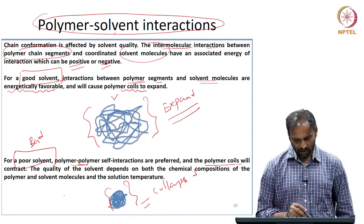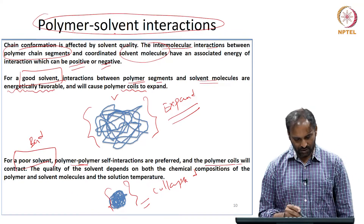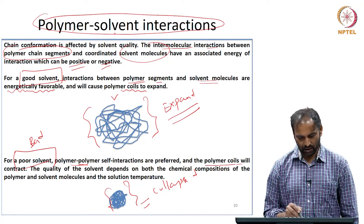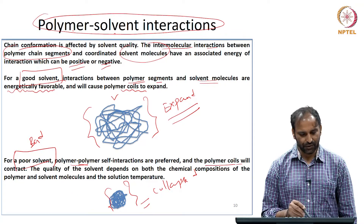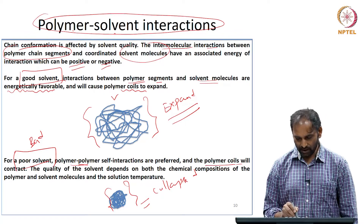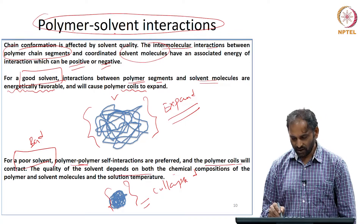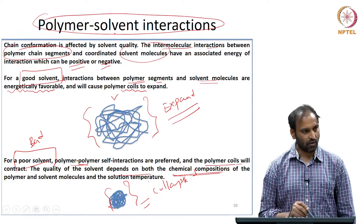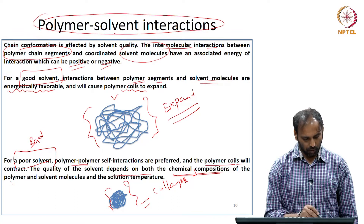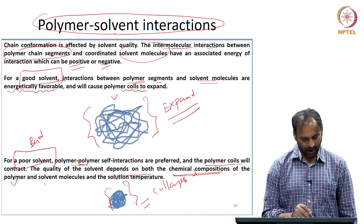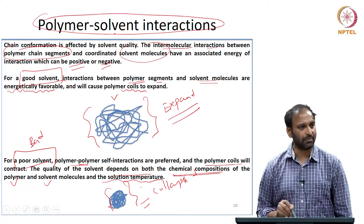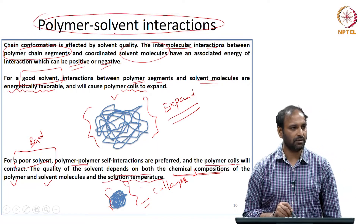The quality of the solvent — that is, whether the solvent is a good solvent or a bad solvent — depends on the chemical composition of the polymer and the solvent, and also the solution temperature.